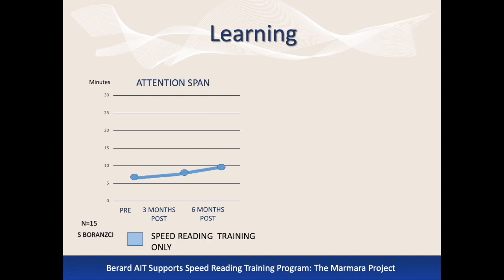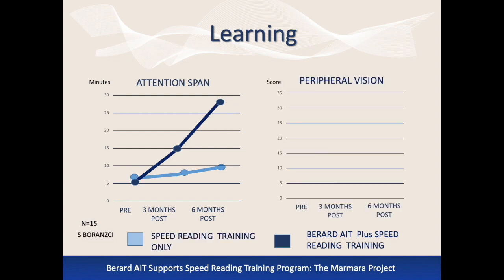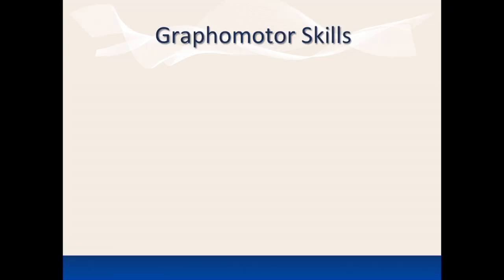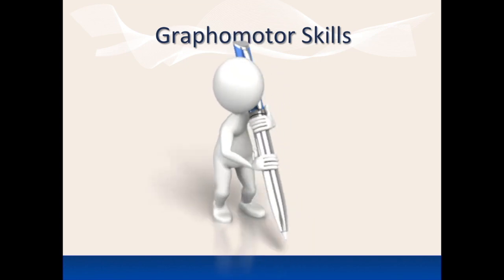Reading attention span increased after the speed reading training for both groups. However, those students who received Berard AIT first followed by speed reading training showed significantly more improvement. An increase in peripheral vision or span of recognition enables the reader to read more quickly as they see the next word and can integrate the meaning more easily. Pre- and post-testing showed an increase of 126% for those who received Berard AIT first, while those who only received the speed reading training increased their score by 45%.